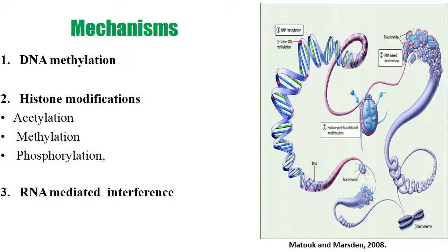The epigenetic mechanisms are DNA methylation, histone modification, and RNA-mediated interference. In epigenetics, DNA methylation is very important. Histone modification involves acetylation, methylation, and phosphorylation, and finally there is the RNAi process.